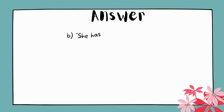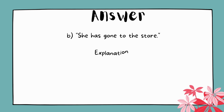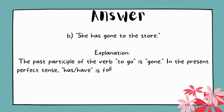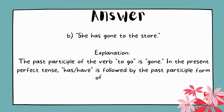The answer is B. She has gone to the store. Explanation: The past participle of the verb 'to go' is 'gone.' In the present perfect tense, 'has' or 'have' is followed by the past participle form of the verb.